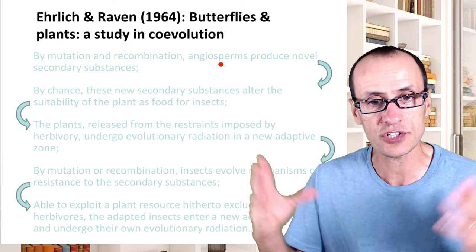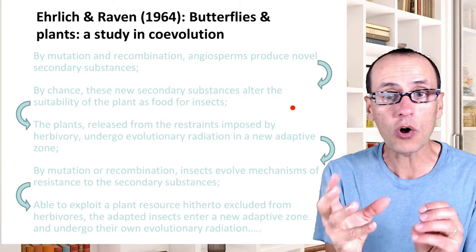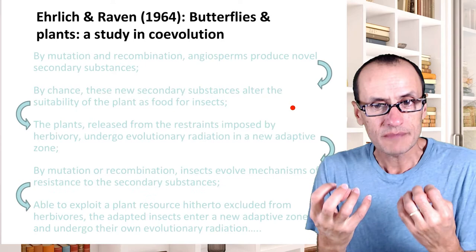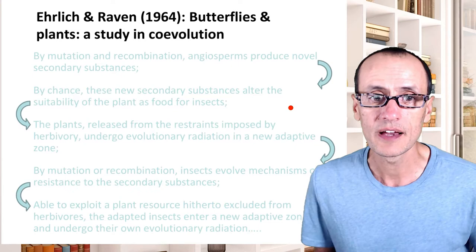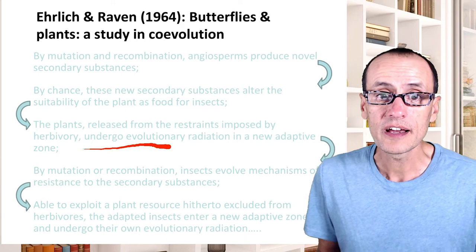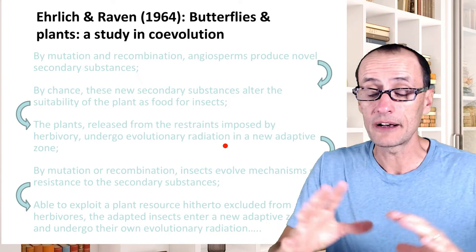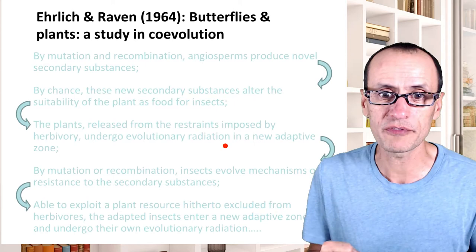By chance, these new secondary substances can alter the suitability of plants as food for insects. Insects may suffer some fitness disadvantage, and the corollary is that plants may be able to reproduce better because they're not getting eaten. Plants being released from the constraints imposed by herbivory can undergo population growth, inhabiting additional niches, and enter what is sometimes referred to as a new adaptive zone.